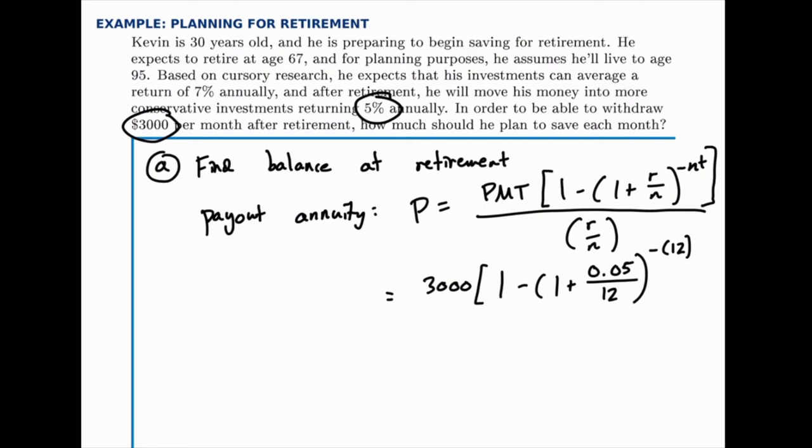So if we look at this, he plans to retire at age 67 and assumes he will live until age 95, so he'll need to withdraw for the difference between those two. And it turns out that's a total of 28 years. If you subtract 95 minus 67, that's 28 years. So he assumes that he'll spend 28 years making these withdrawals in retirement. So T is 28.